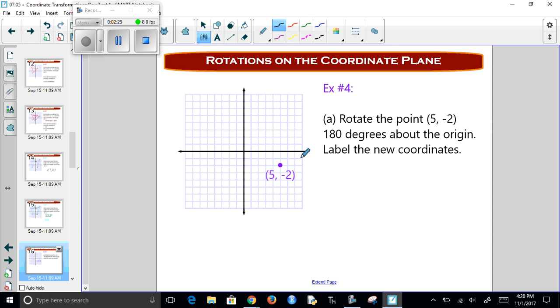Now rotating. Now this is a tricky thing. There's two ways to think about this. We're going to rotate this point, (5, -2), 180 degrees about the origin.